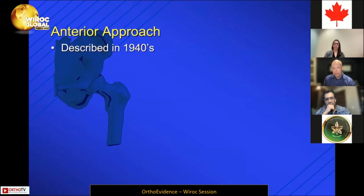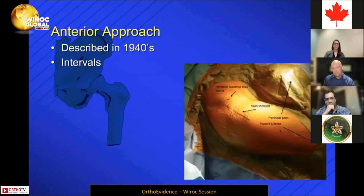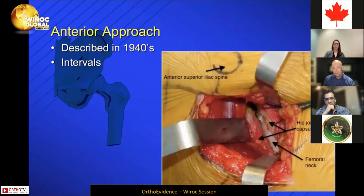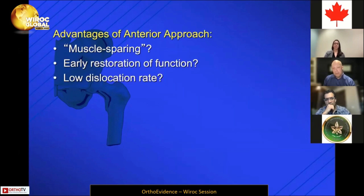Regarding the anterior approach, it's not a new surgical approach — it's just become more popular recently for total hips. Your interval involves an incision usually curving slightly laterally just off of the ASIS. It is an internervous intermuscular plane between sartorius and TFL, which brings you down fairly quickly onto the capsule, and then you can proceed with the total hip from that point.